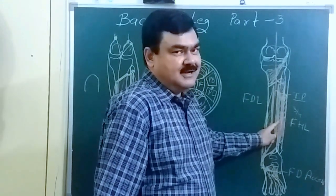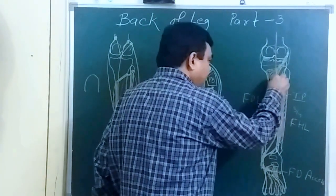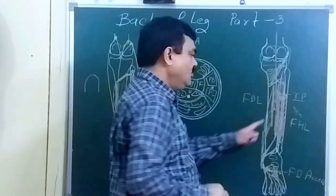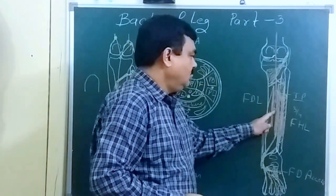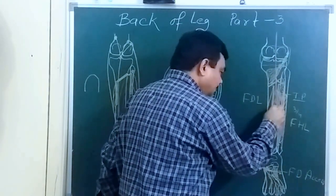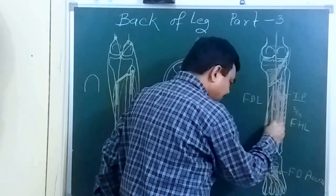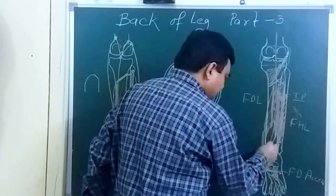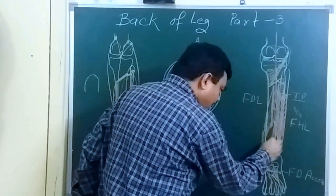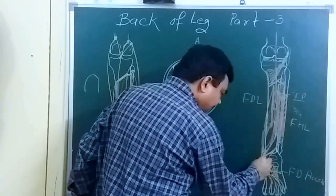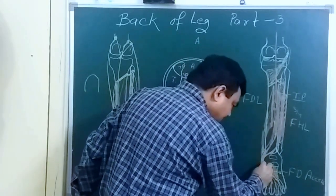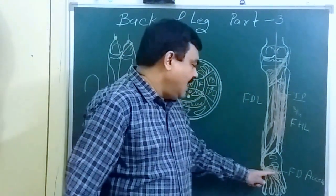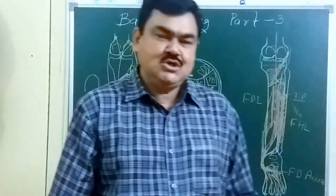The posterior tibial artery gives a nutrient branch to the tibia, then gives muscular branches and a medial malleolar branch. After passing through the flexor retinaculum, it divides into two terminal branches — the medial and lateral plantar arteries — which supply the sole of the foot.